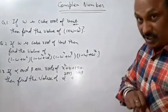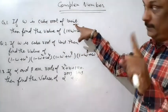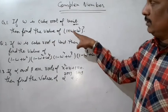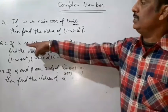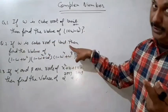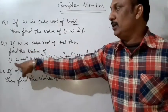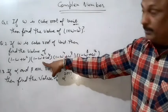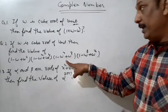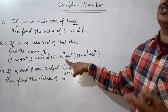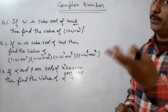Our first question: if ω is a cube root of unity, find the value of (1 + ω + ω²)⁷. Second question: if ω is a cube root of unity, find the product of (1 - ω + ω²)(1 - ω² + ω⁴)(1 - ω⁴ + ω⁸)(1 - ω⁸ + ω¹⁶). Third question: if α and β are roots of x² + x + 1 = 0, find α²⁰⁰⁹ + β²⁰⁰⁹.